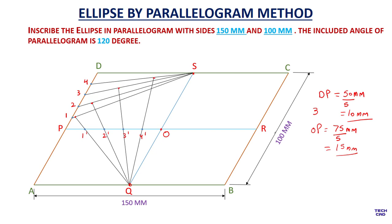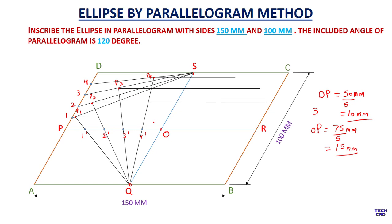I can now give names to these points: P1, P2, P3, and P4. From point P4 extend your line towards the right side, and from points P3, P2, and P1 also extend lines towards the right side. These extension measurements can be any length.